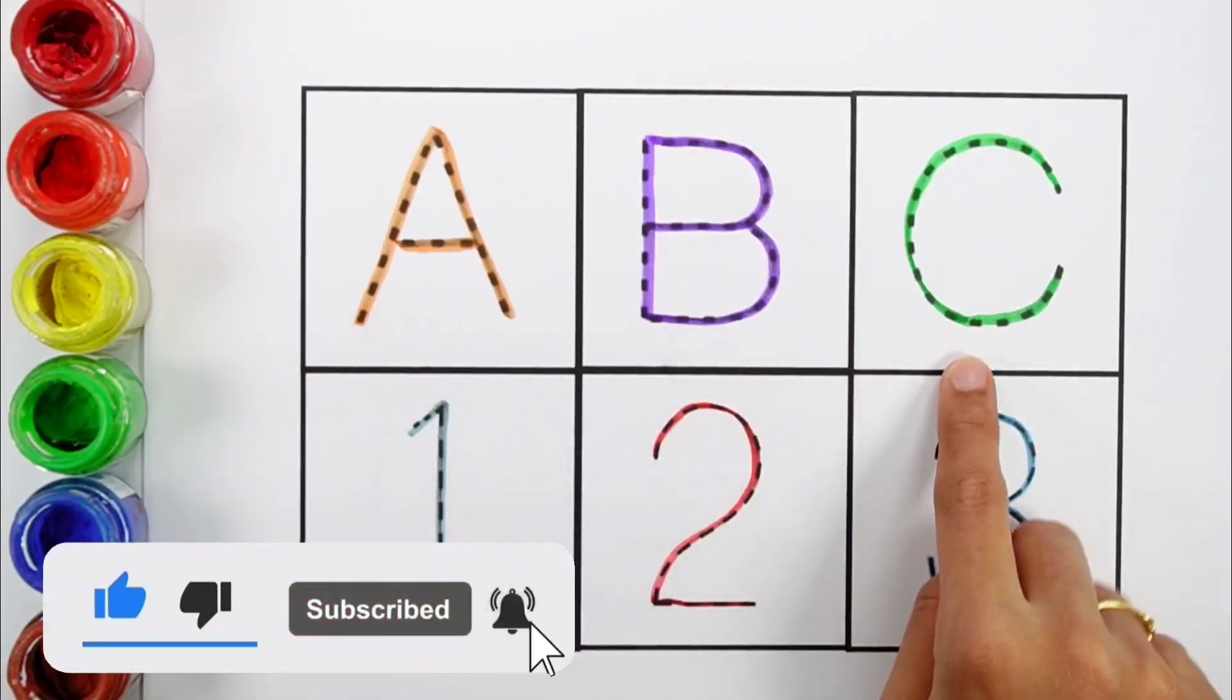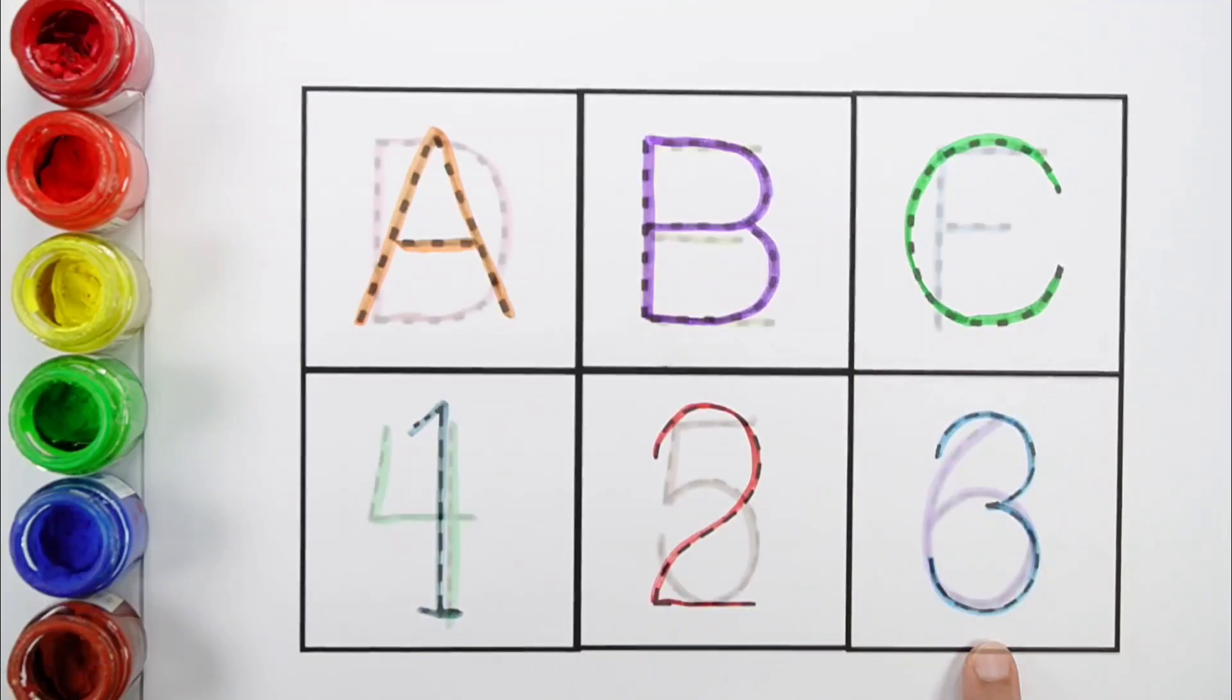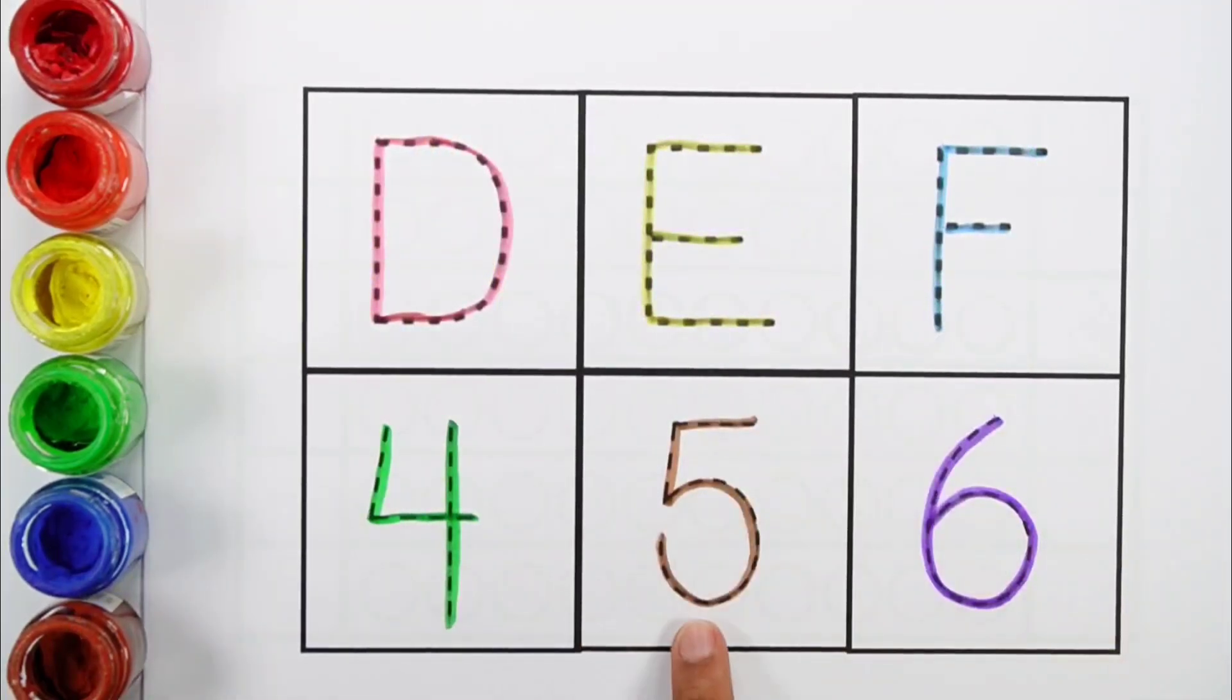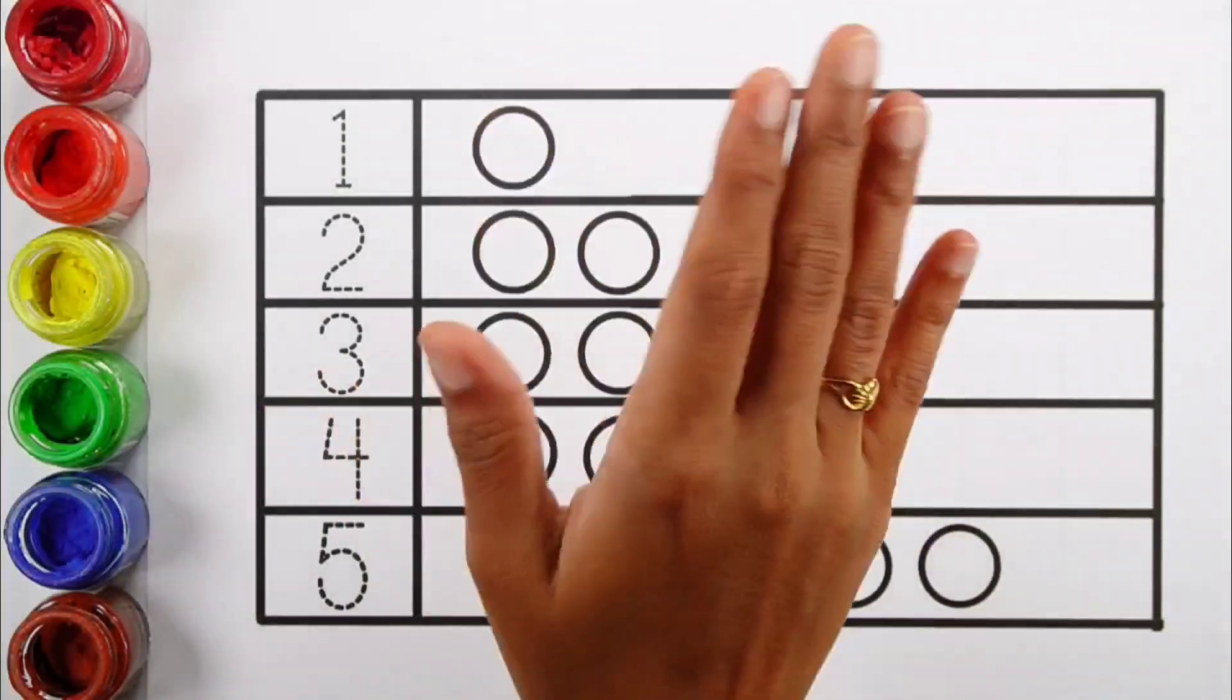A, B, C. One, two, three. D, E, F. Four, five, six. Hello guys.